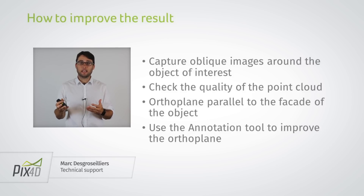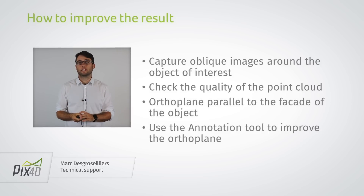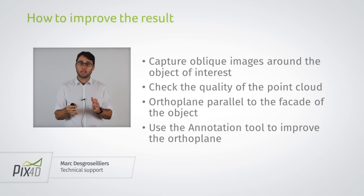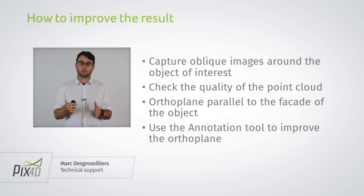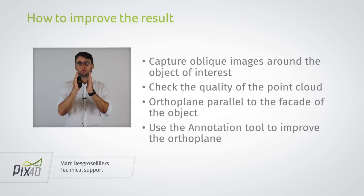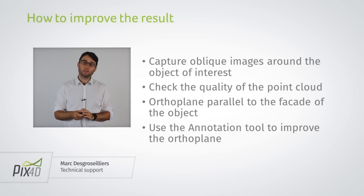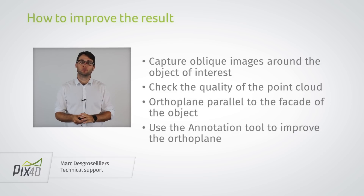In your project, you can check this by looking at the side of the building and making sure that you have enough points and enough images pointing towards the side of the building. We already mentioned that the green arrow should be pointing towards the side of the building that you want to capture, but it's also important for the orthoplane to be parallel to the side of the building. And finally, to remove background, there's the annotation tool that you've seen in the software just previously.